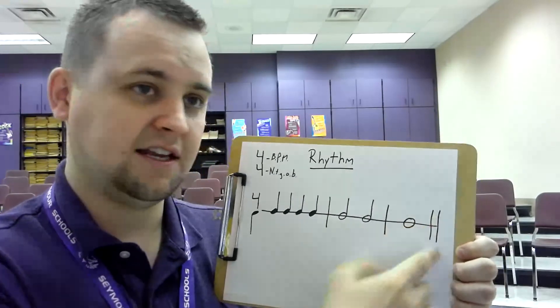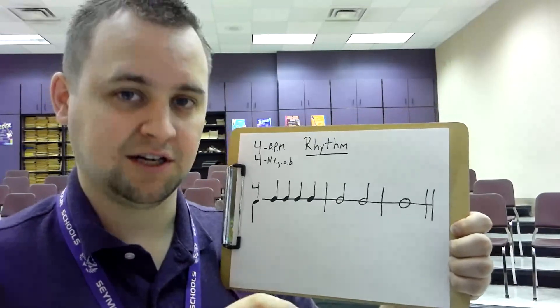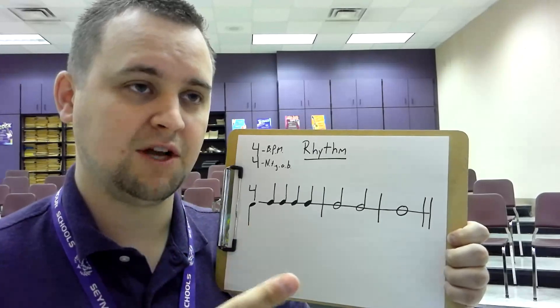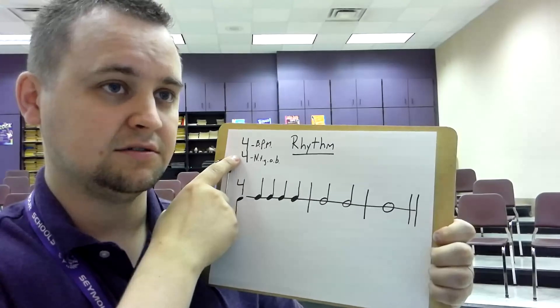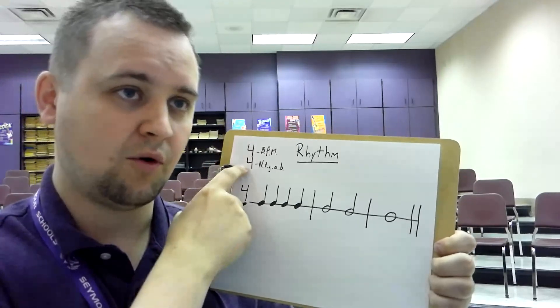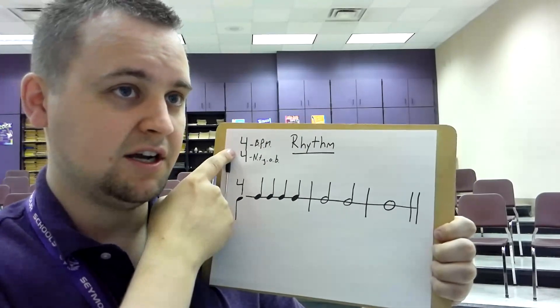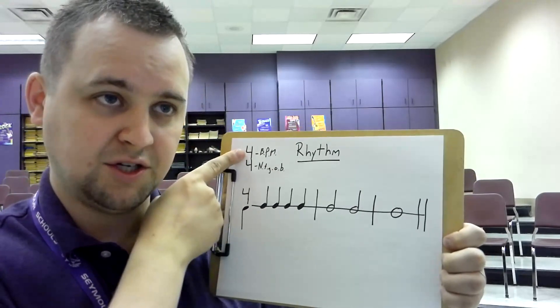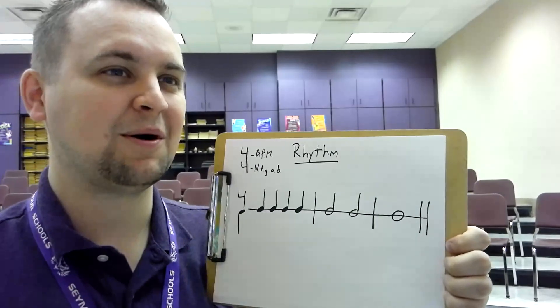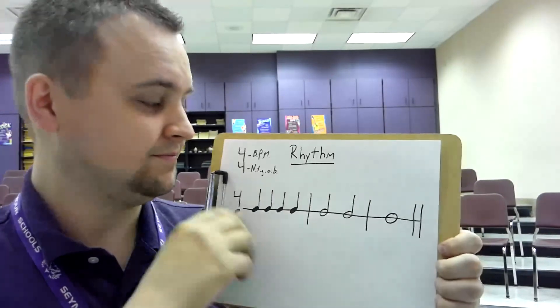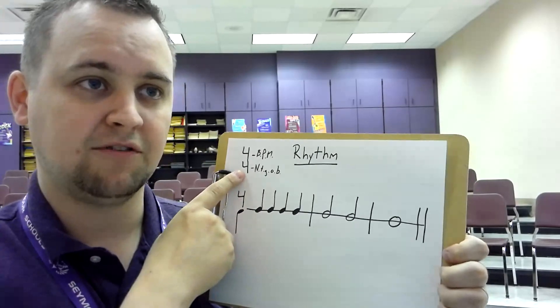Okay, so the first thing we need to do when we're looking at a rhythm is determine its time signature. The time signature tells us two very important pieces of information we need to perform this example. So the time signature usually looks like this. Now it's not always four four, sometimes it's two four, three four, six eight, twelve eight, there's a bunch of them. But the most common one, at least the one we'll look at most in here, is four four time. The top bit of information tells us the BPMs, that's the beats per measure. How many beats are in a measure? The bottom tells us the note that gets one beat.